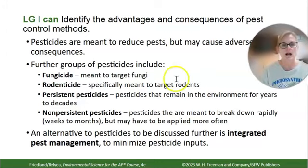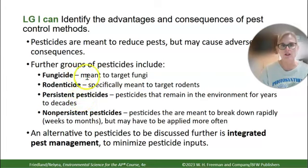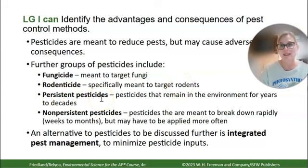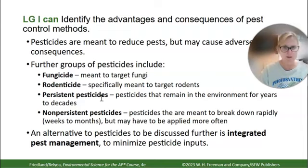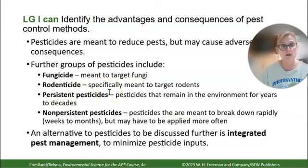Pesticides are designed to reduce pests, but they can have significant consequences. There are four categories: fungicide for fungus, rodenticide to kill rodents, insecticide for insects, and herbicide for weeds. Persistent pesticides stay in the environment for decades, while non-persistent pesticides break down more quickly. An alternative approach is integrated pest management, which will be covered more later in the unit.